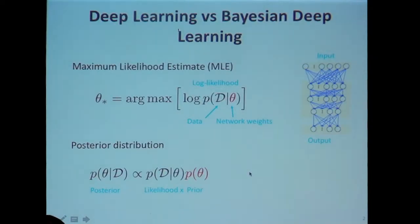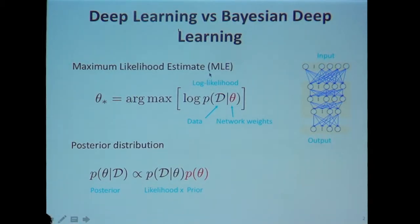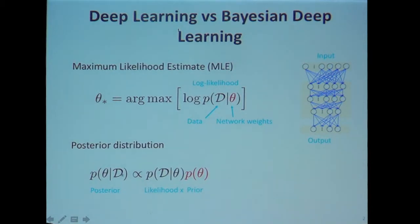Let me start by comparing deep learning versus Bayesian deep learning. In standard deep learning, we usually compute a point estimate using maximum likelihood estimation. Given a network with weights denoted by theta, you define a log likelihood and maximize it to compute one estimate of the parameter. Bayesian deep learning tries to go beyond this and find a distribution around the parameters.